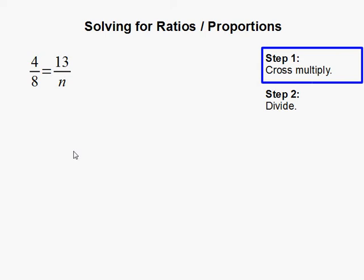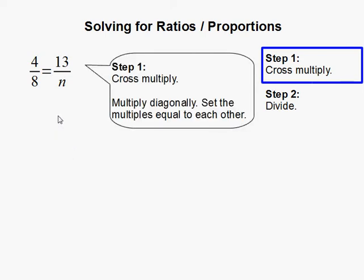The first step is to cross multiply. Cross multiply means to multiply diagonally. 4 times n and 8 times 13.